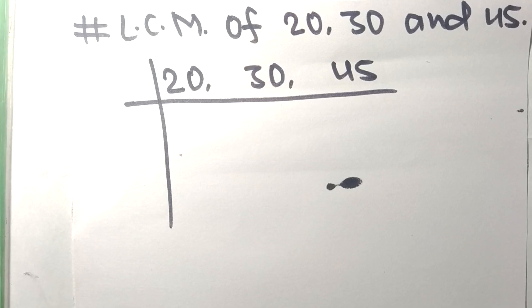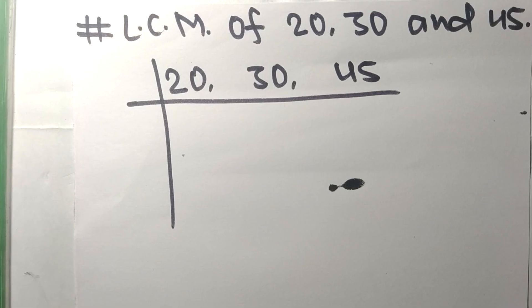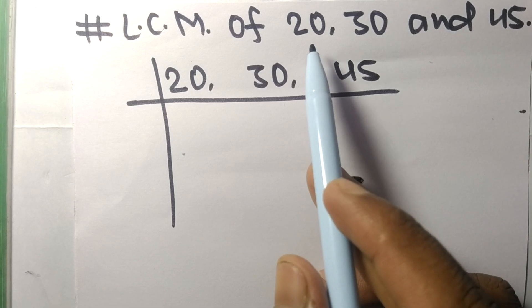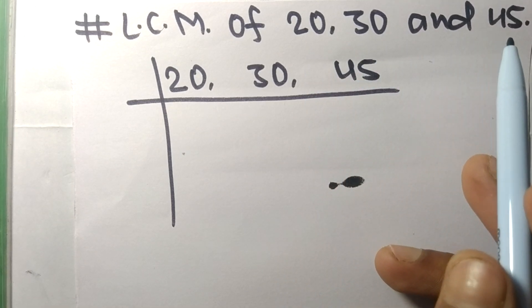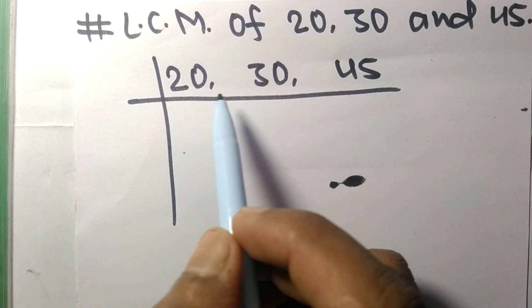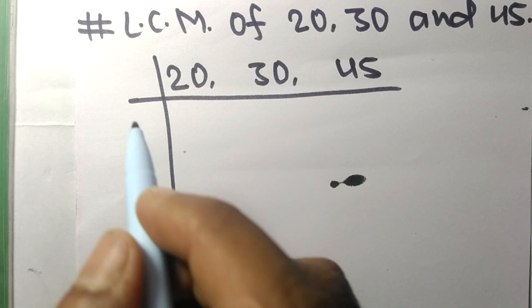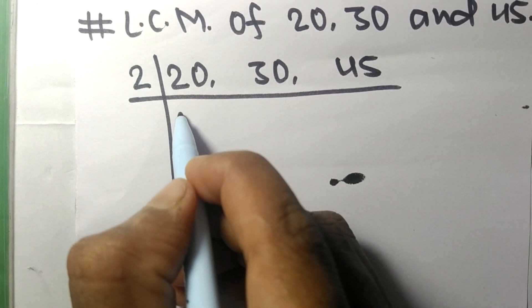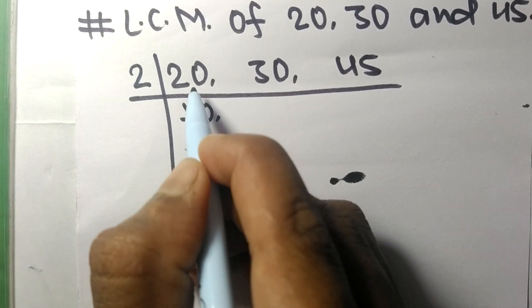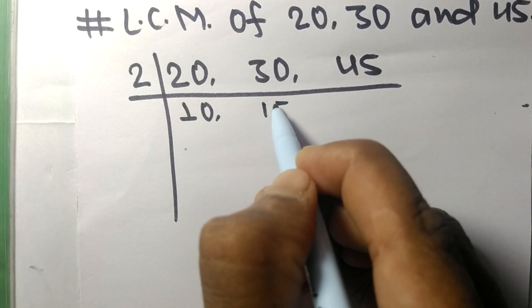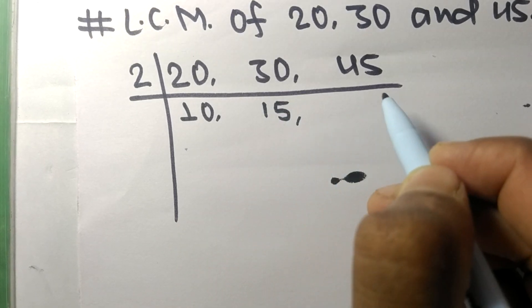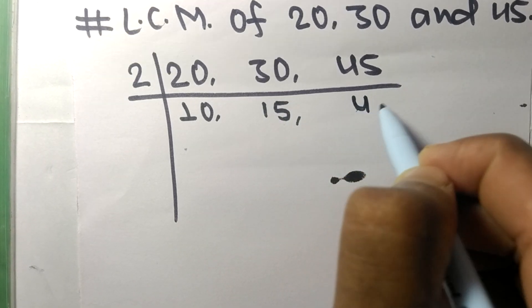Today in this video we shall learn to find the LCM of 20, 30, and 45. So 20 and 30 are divisible by 2, so 2 times 10 equals 20, 2 times 15 equals 30. 45 is not divisible, so it stays the same.